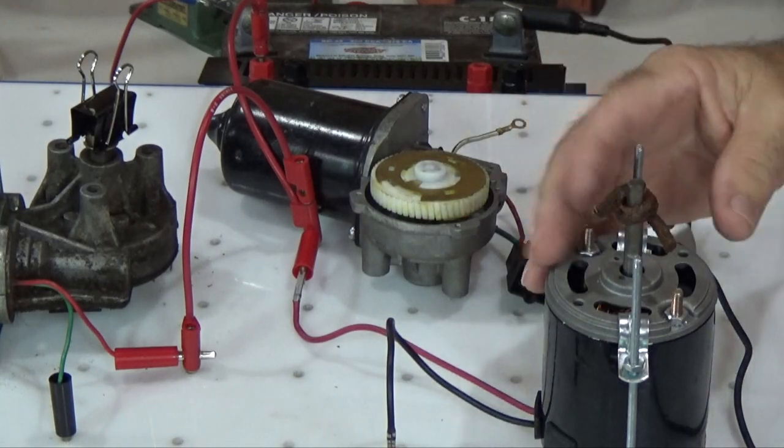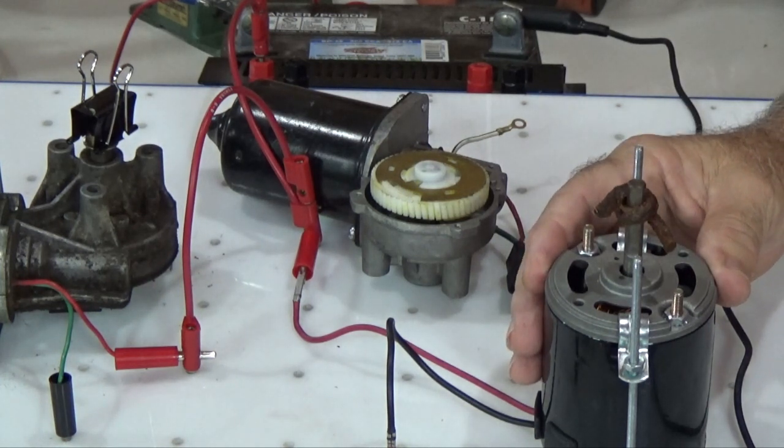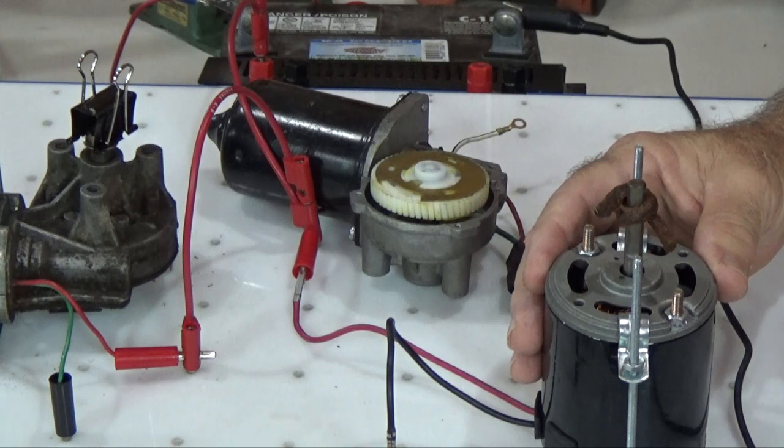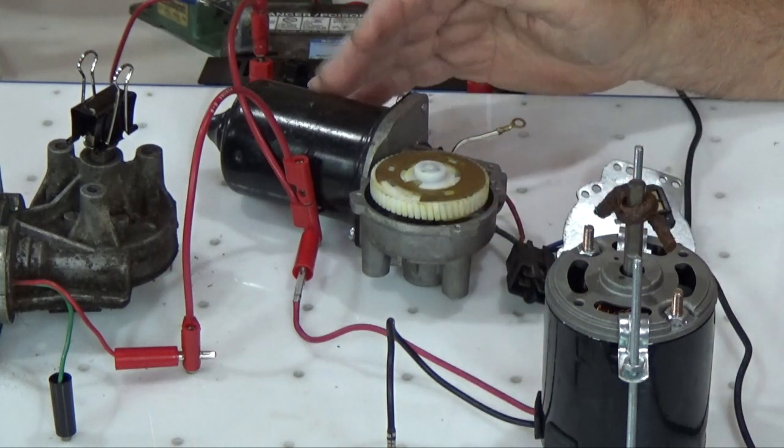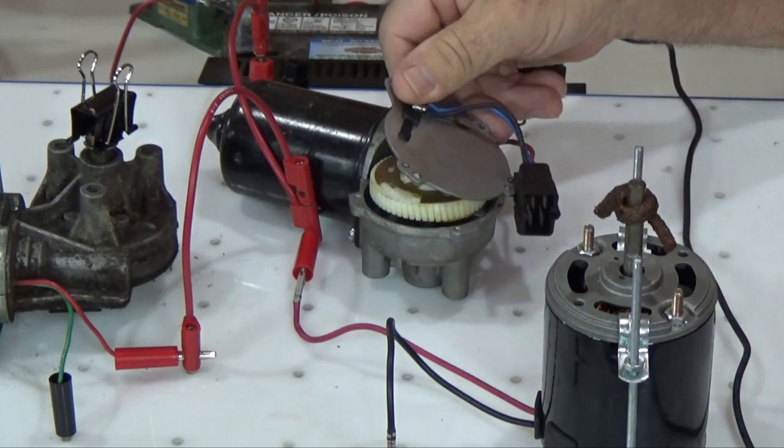You may be asking why does the blower motor spin so much faster? Well, just like a manual transmission gives you different gears, a wiper motor has gears too inside the wiper motor. I've taken the cover off so you can see.